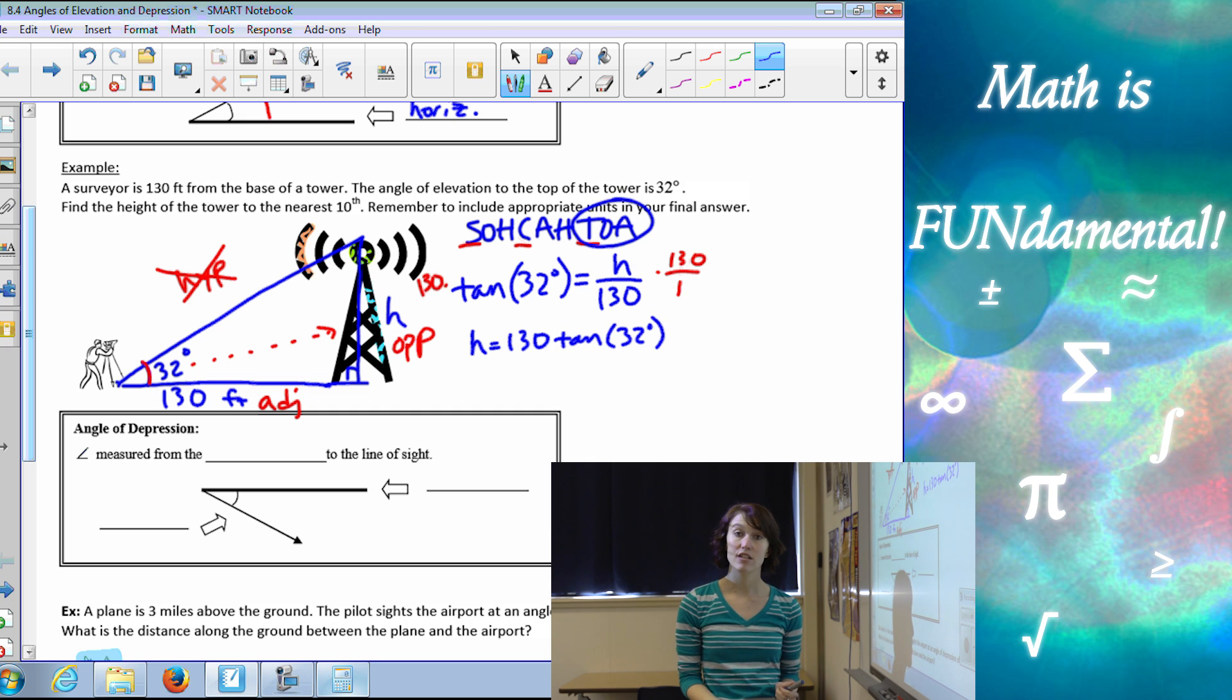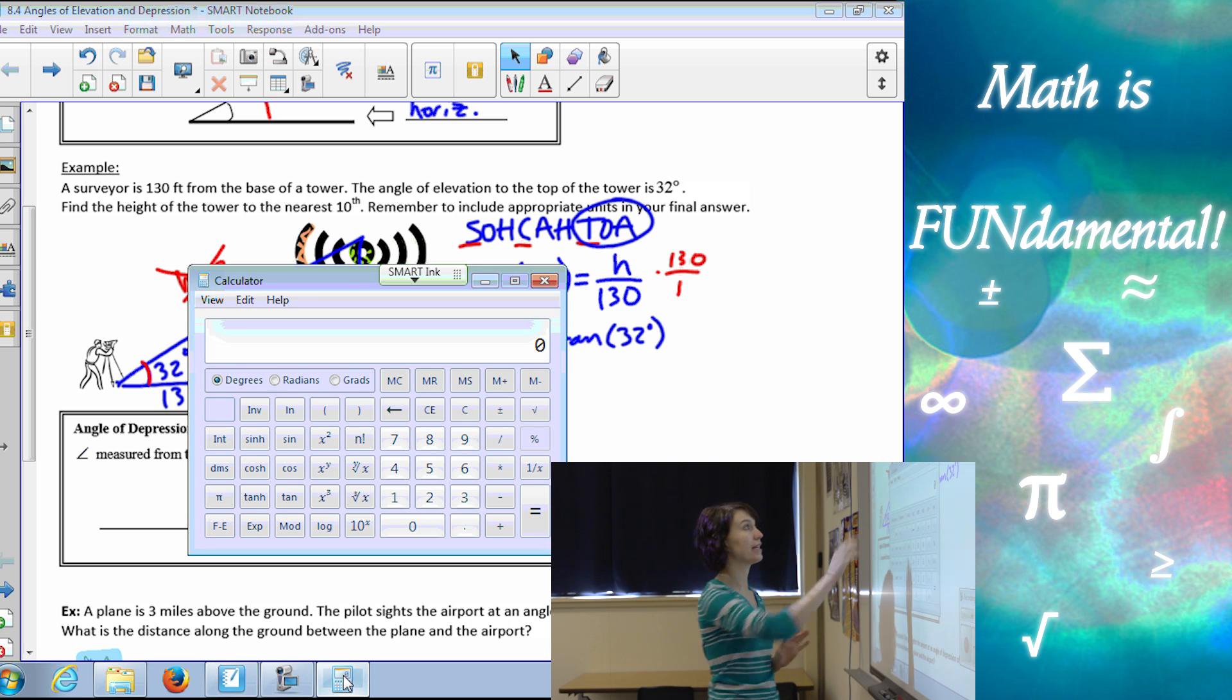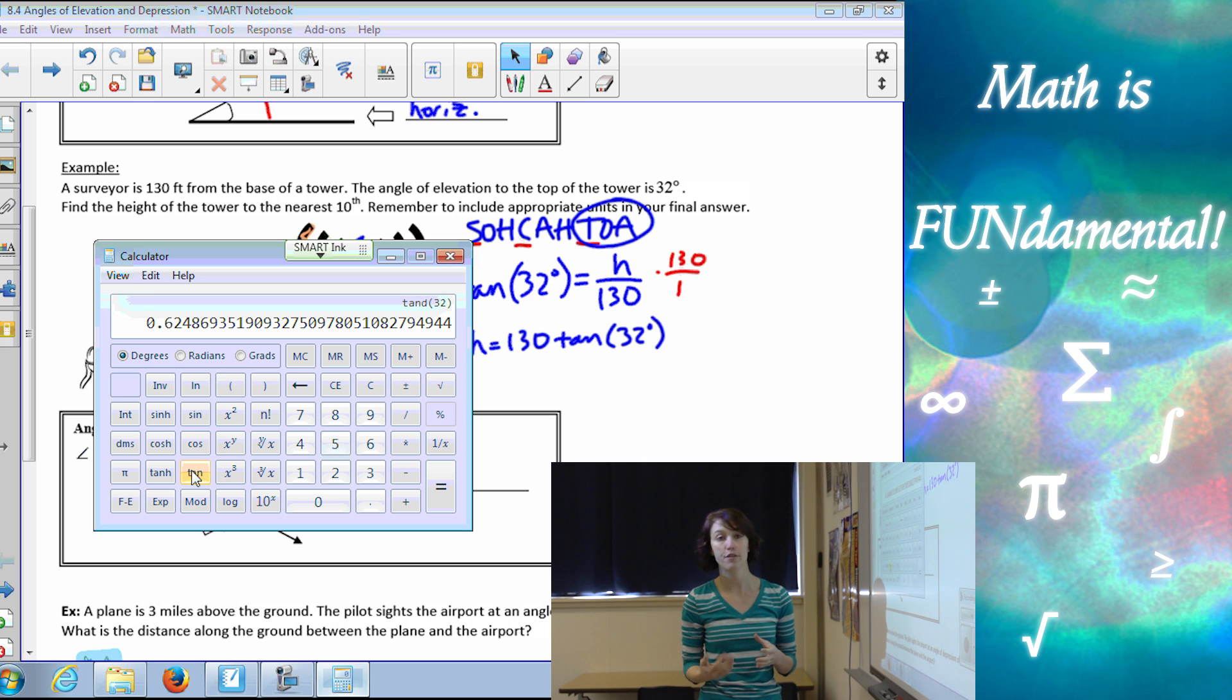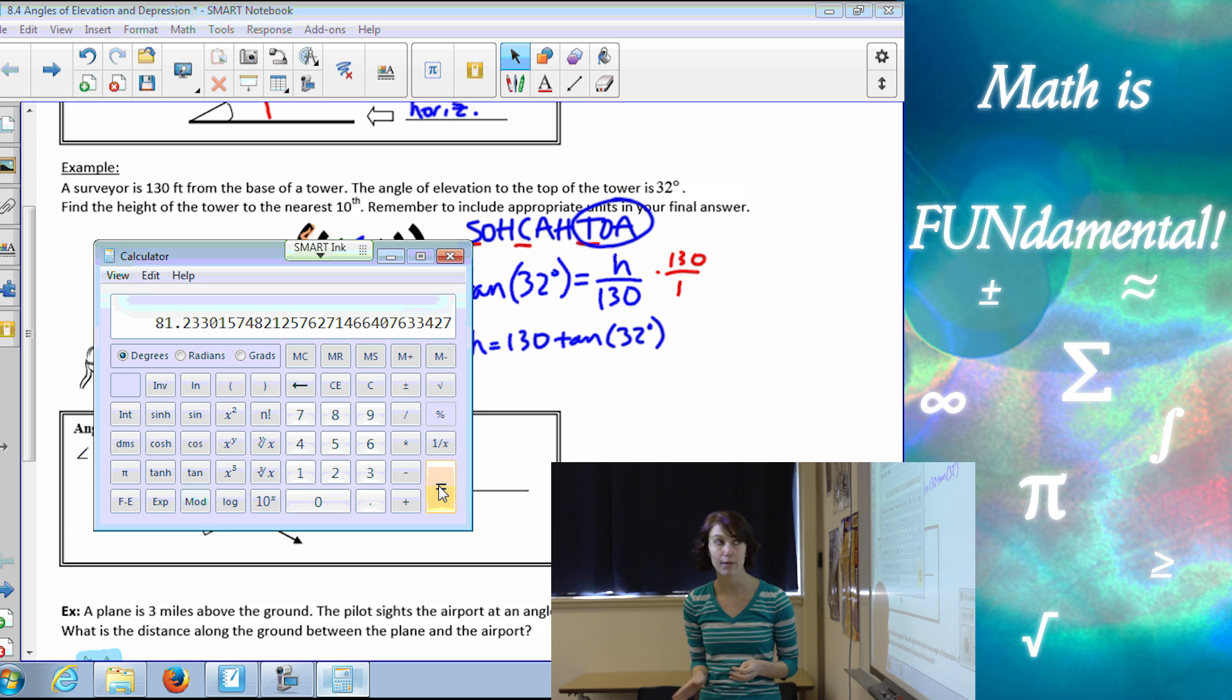Now we can't solve for this by hand, so if you don't have a calculator, this is where you would stop. But in this problem it does say to find the height of the tower to the nearest tenth. So it wants us to use a calculator to approximate the height. So here I pull up my scientific calculator, and I want the tangent of 32. So again, my calculator works a little differently, maybe, than yours. I have to put my angle in first and then hit the tangent button, which gives me tangent of 32 degrees. And then I have to multiply by 130 after that. Your calculator might be a little different, so just make sure you're familiar with your device.